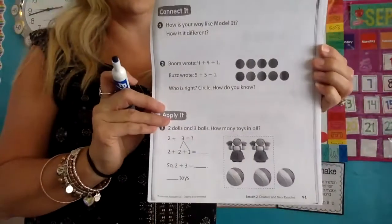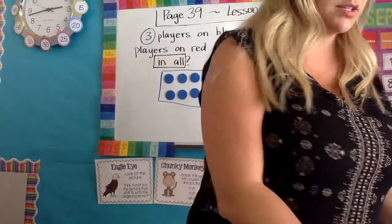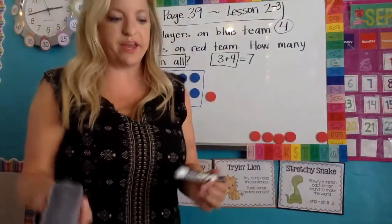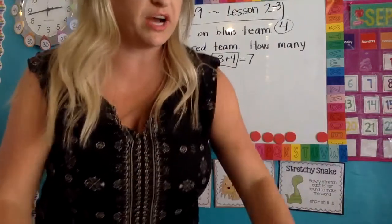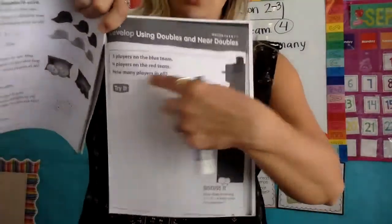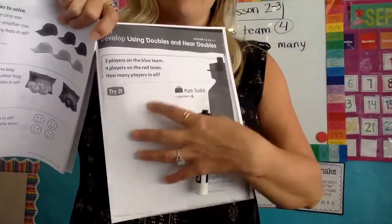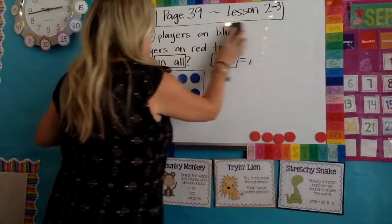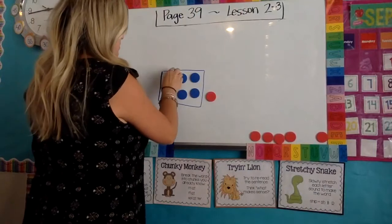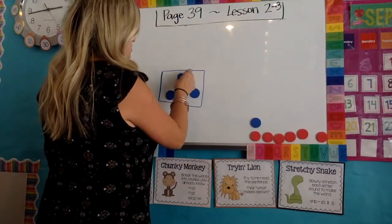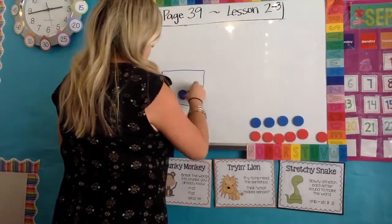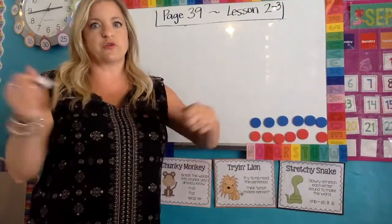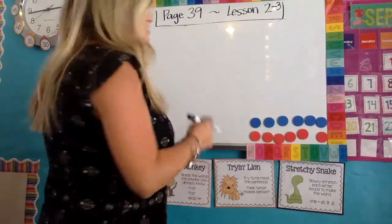Turn the page to 41. Number one is: how is your way like the model, and how is it different? So when you did try it on your own without Ms. Lamb, what they're asking is what was different and the same from what you did to what the book did? How was yours different and how is it the same? That is what you're going to need to answer on your own — I don't know what you did for try it, so I can't answer that for you.